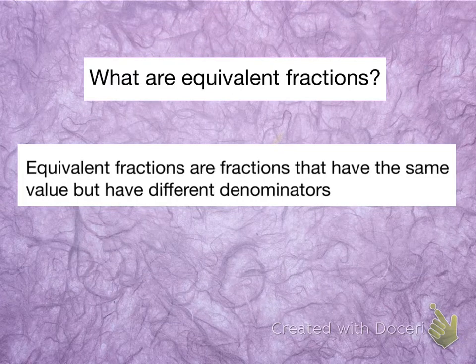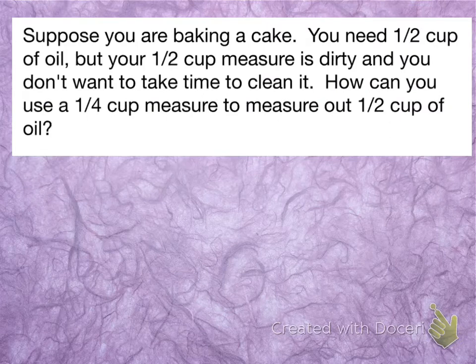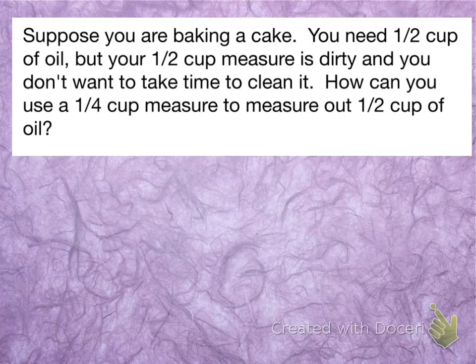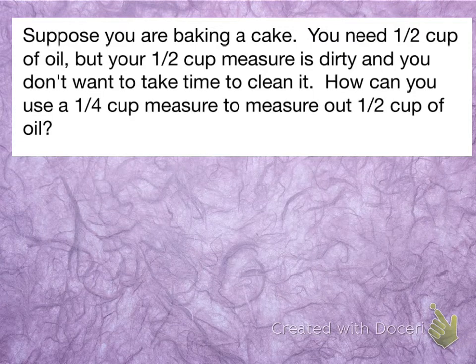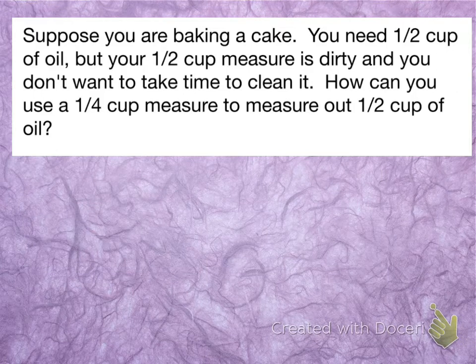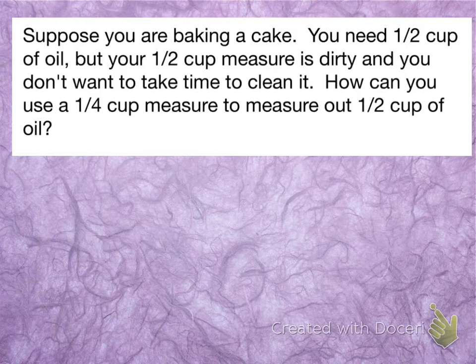You might have actually done this in real life when you're cooking or baking. Let's suppose we're baking a cake. We need to measure out a half a cup of oil, but our half cup measure is dirty and we're in a hurry, so we don't want to take time to clean it. But we do have a clean quarter cup measure. How can I use that quarter cup measure to get half a cup of oil?